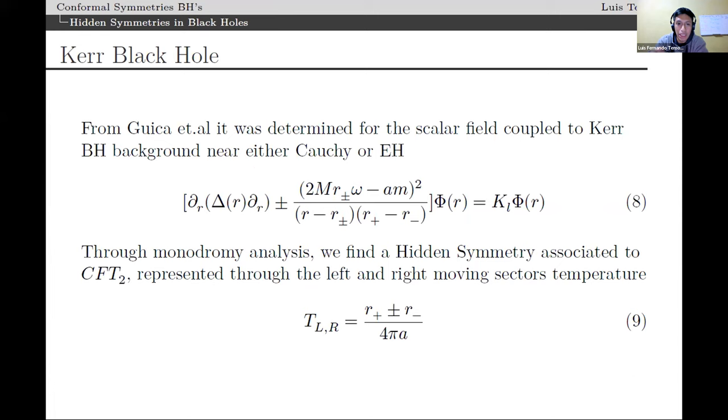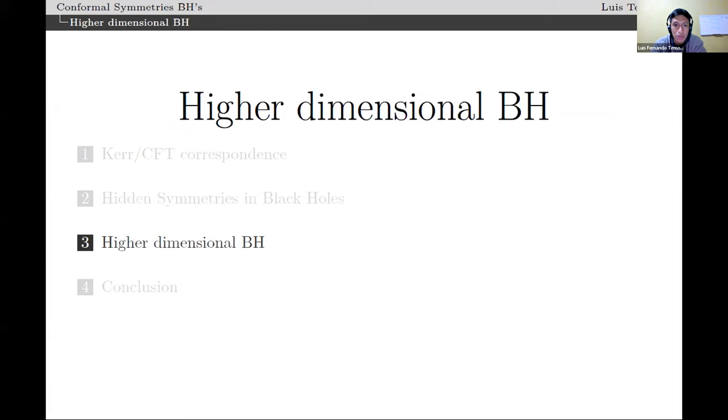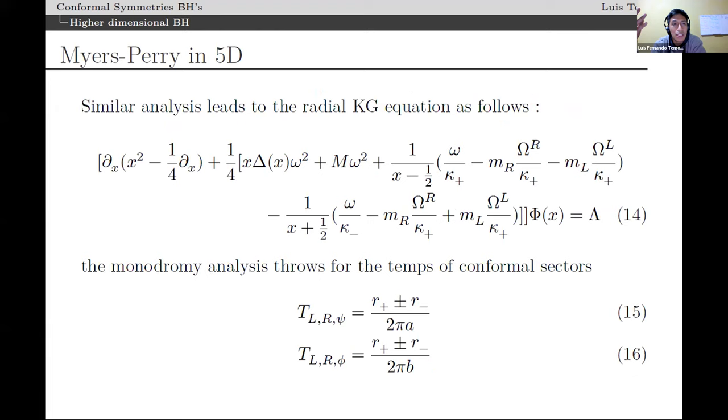Again for instance, in the case of the metric, the conformal transformations reveal this hidden conformal symmetry in a different way. In the previous slide I showed that through the Klein-Gordon equation the temperatures could be recovered. In the case of the metric this is done by factorizing an AdS3-like warp factor in the Kerr black hole metric, and this idea can be generalized to higher dimensions.